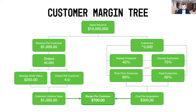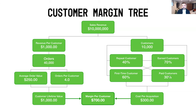On the other side of the equation, out of 10,000 customers we typically look at percentage splits. For example, 70% of your customers might be earned customers — coming through word of mouth, social media, or other earned channels. The remaining 30% might be paid customers you've acquired through advertising on platforms like Facebook, Google, YouTube, or other channels.